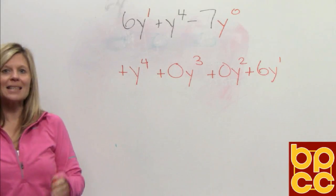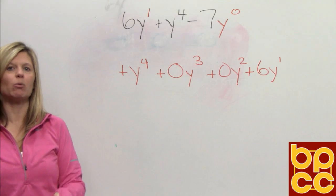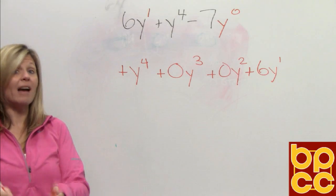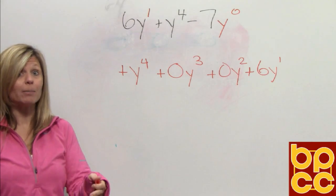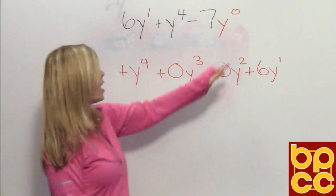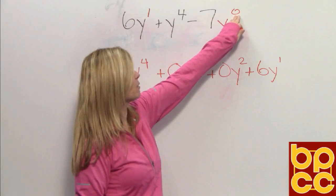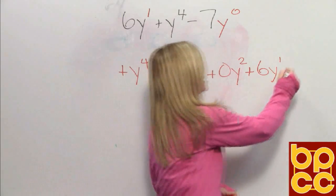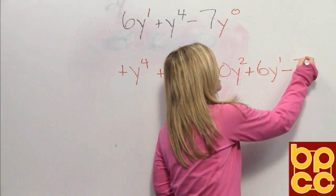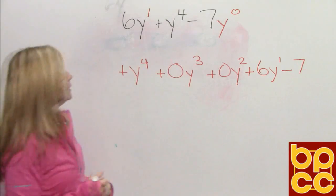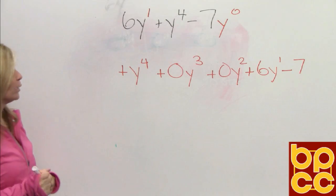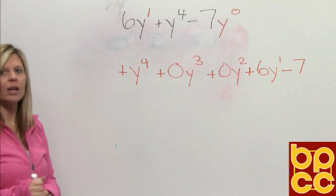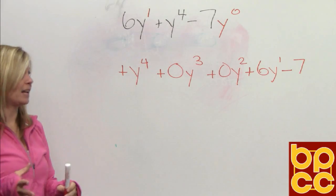And then the last thing that should always be written is the constant. The constant will never have a variable — that's why the exponent is 0. So we would just write the constant: negative 7. Now, if we look at this polynomial, it's not finished. We've got to fix it up a little bit.